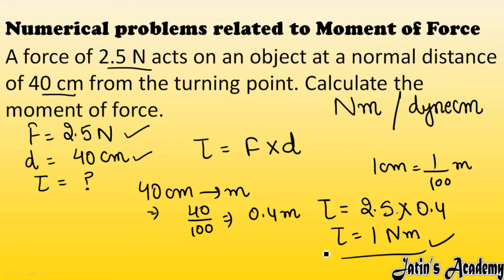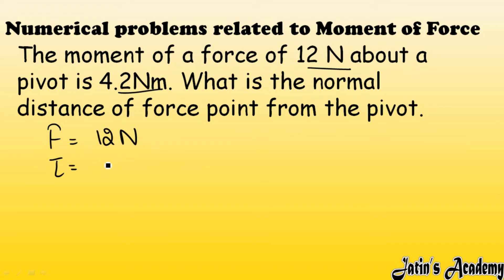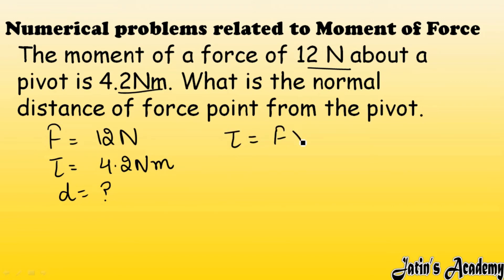Next, in the second numerical, the moment of force is given about a pivot as 4.2 newton meter — that is torque — and force is given as 12 newton. We have to find the normal distance. Using the formula torque equals force multiplied by perpendicular distance, torque is 4.2 and force is 12, so we solve for distance d.